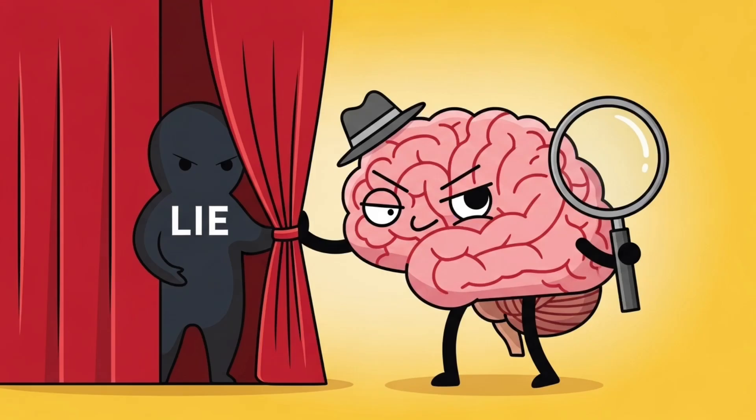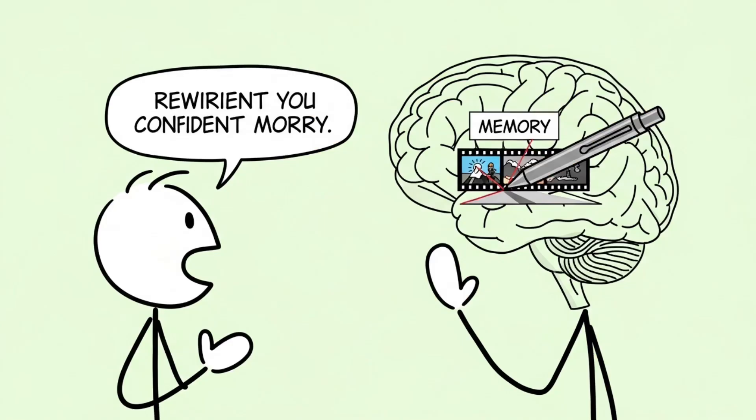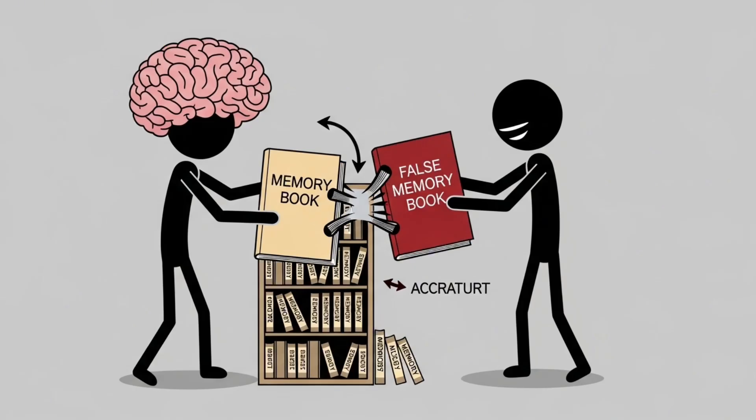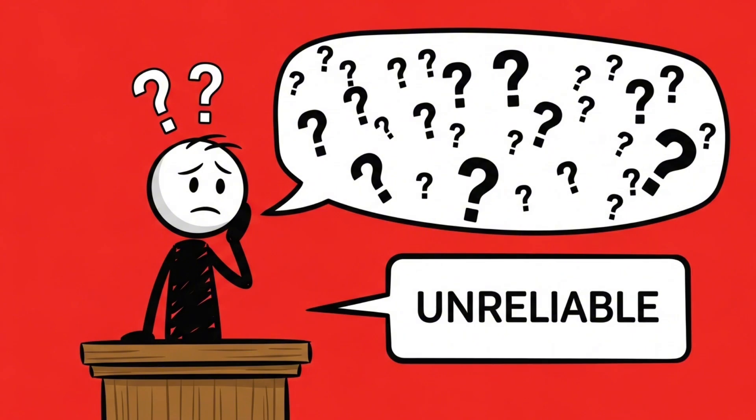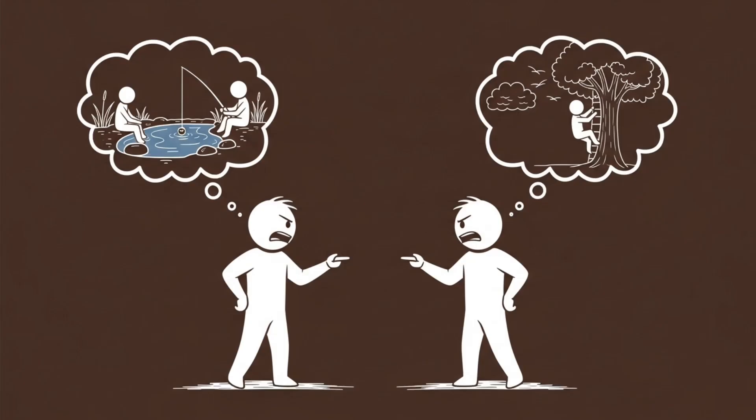Number two, the memory rewrite. Here's the creepiest part. Your brain doesn't just miss lies, it sometimes helps them. When someone lies to you convincingly enough, your brain can literally rewrite your memory to match their version of reality. It's called memory conformity. Your hippocampus, which stores memories, merges information from other people's accounts, even false ones, with your own. So if someone insists that something happened differently and they sound confident enough, your brain goes, oh yeah, maybe I'm the one who remembered it wrong. This is why eyewitness testimonies are notoriously unreliable. It's also why you've probably argued with a friend about a shared memory and one of you swears the other is lying, but both of you are convinced you're right.